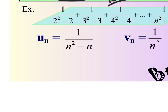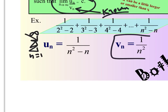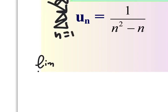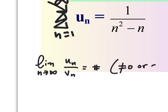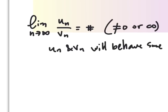For example, if I took the sum from n equals 1 to infinity, it's not always clear whether or not that would converge. But if I compare it to something I know converges, the result is pretty cool. What we're looking for is: as we take the limit as n goes to infinity of our unknown sequence over our known sequence, if we get a finite number that's not equal to zero or infinity, then u sub n and v sub n will behave the same — they'll either both converge or diverge.